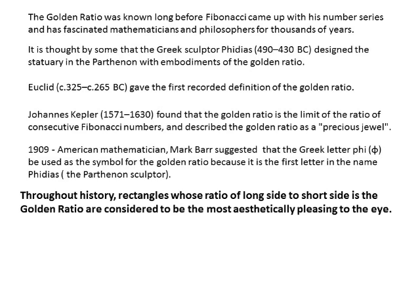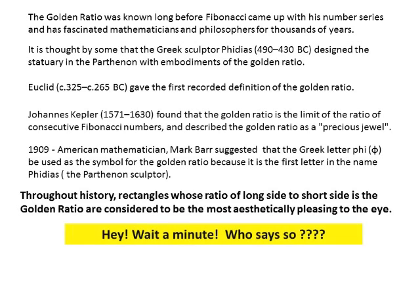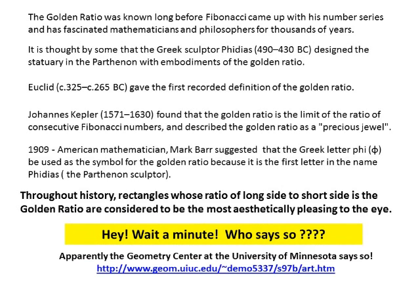In 1909, American mathematician Mark Barr suggested that the Greek letter phi be used as the symbol for the golden ratio, because it is the first letter in the name of Phidias, the Parthenon sculptor. Throughout history, rectangles whose ratio of long side to short side is the golden ratio are considered to be the most aesthetically pleasing to the eye. Hey, wait a minute — who says so? Apparently, the Geometry Center at the University of Minnesota says so, and a host of others. If you do an internet search, you'll find plenty.